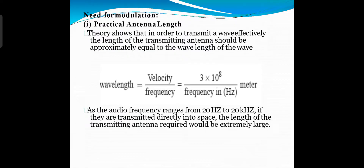What is the need of modulation in the communication system? The message signals have very low frequency, due to which these signals cannot be transmitted over a long distance. Hence, such low frequency message signals are modulated over a high frequency carrier signal for reasons like practical antenna length. For effective transmission, the height of the antenna should be comparable to the wavelength lambda of the signal, and at least lambda by 4 in length so that the antenna can sense the variation of the signal properly.